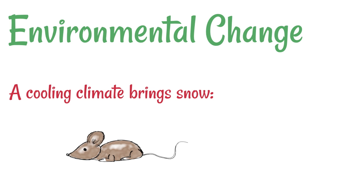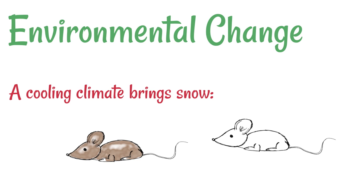Let's look at an example. This rodent here is adapted to its environment and it's got a brown colour because it's probably quite well camouflaged against the earthy colours around. But a cooling climate brings snow. As a consequence of completely random variations, there might be a very, very small number of the population that have got white fur. Remember that it hasn't developed white fur in response to the snow — it's just completely by chance. However, because of the new selection pressure, this one with the white coloured fur is better camouflaged. Through evolution, we might find that the population as a whole adapts and we end up with a majority of these organisms becoming white coloured.